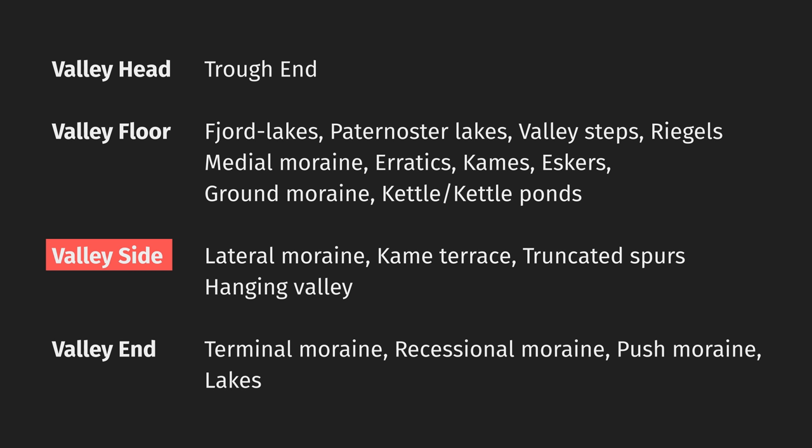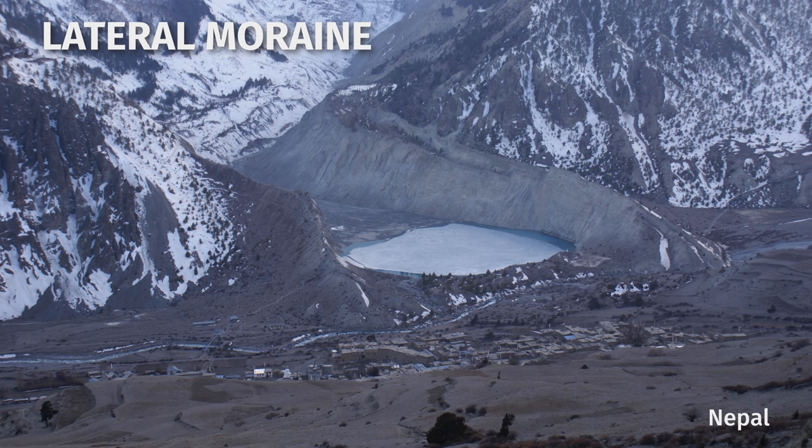Kettles are small bowl-shaped depressions that form when a detached or buried block of ice melts. At the sides of the U-shaped valley, we can expect to find the remnants of the glacier's lateral moraines.